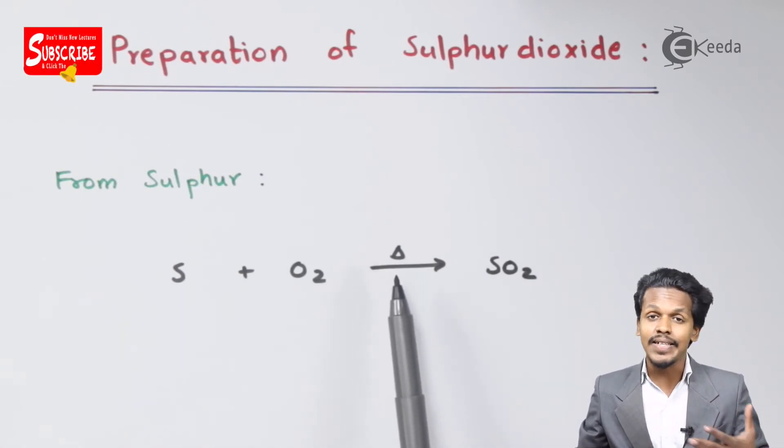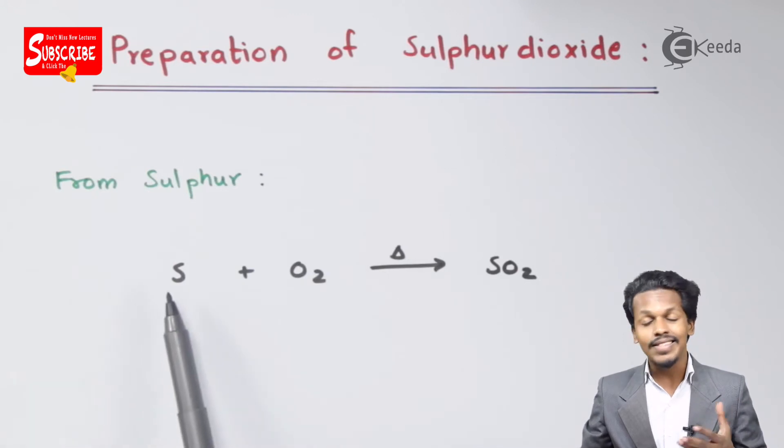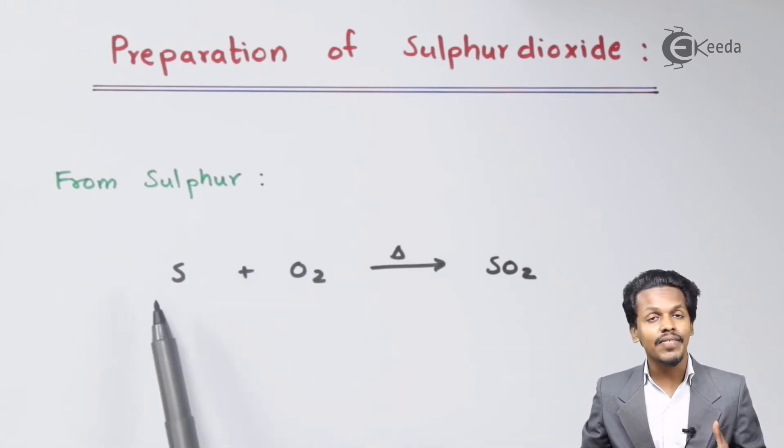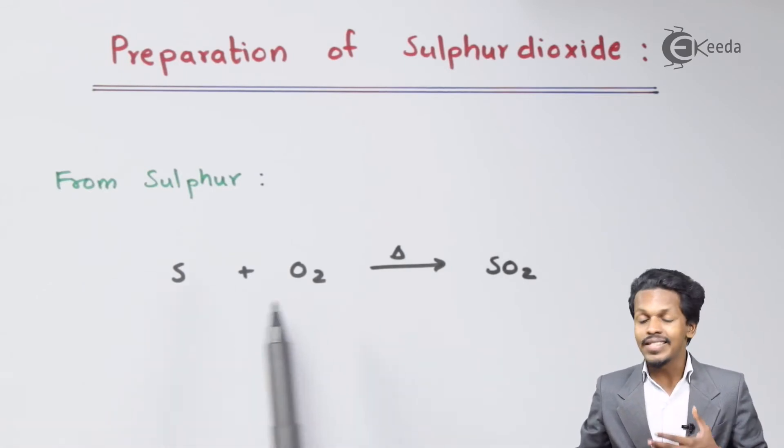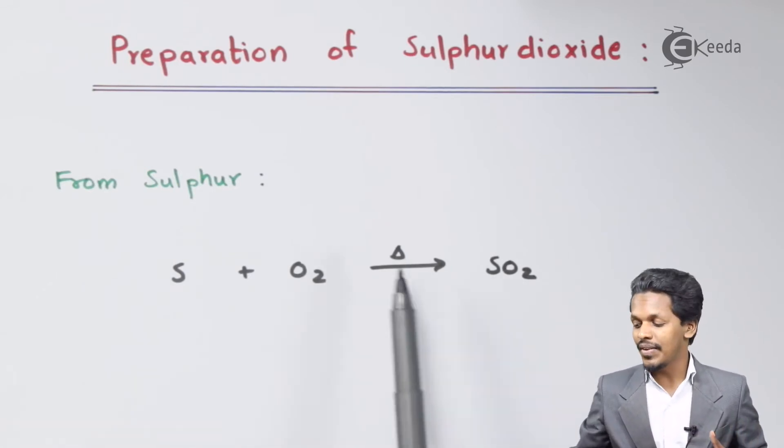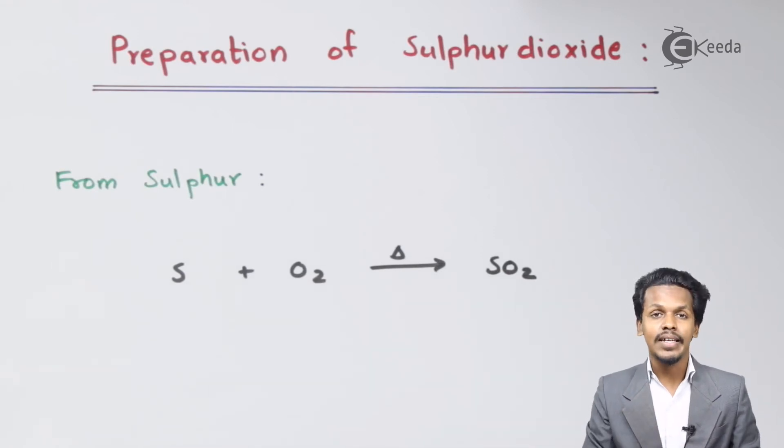The sulfur gets oxidized with oxygen and produces SO₂. In actual practice, sulfur doesn't react with oxygen on its own—we have to provide high temperature. Therefore, whenever sulfur is burned, it produces sulfur dioxide. This is one method.